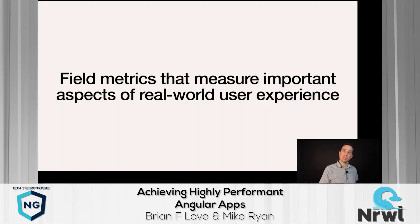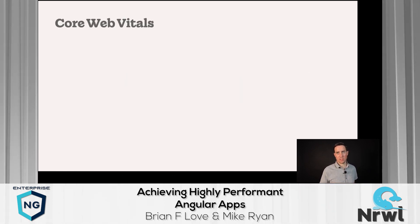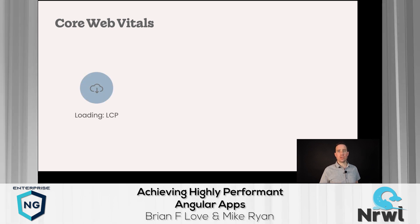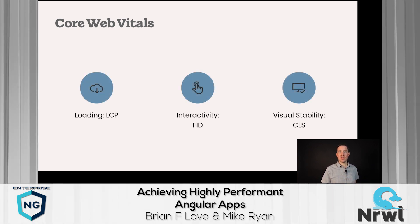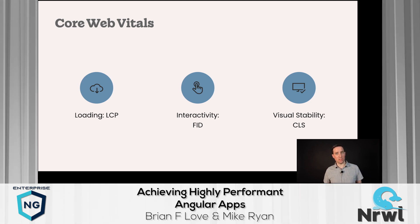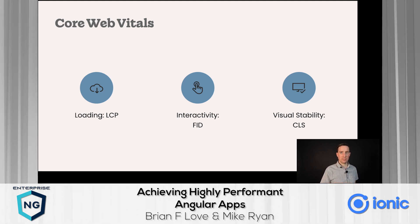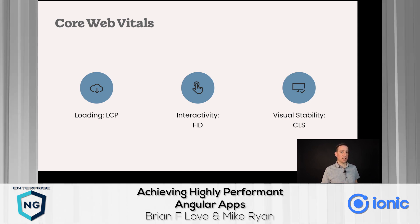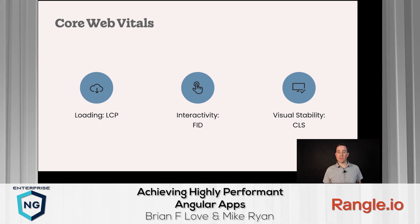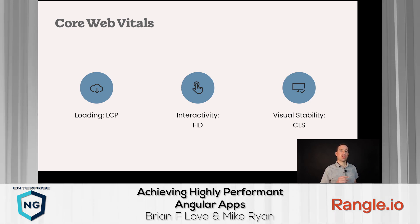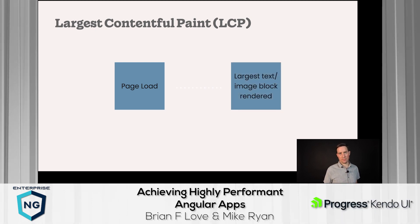Core Web Vitals are field metrics that measure important aspects of real-world user experience. Core Web Vitals focuses on three areas: loading, interactivity, and visual stability. For loading we measure Largest Contentful Paint, for interactivity we measure First Input Delay, and for visual stability we measure Cumulative Layout Shift.